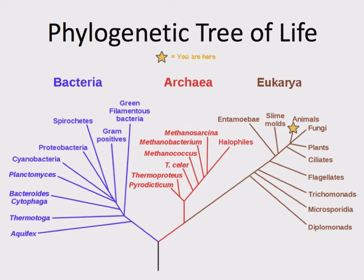Here is an example of a phylogenetic tree — kind of the phylogenetic tree. This is zoomed out as far as you can go, because this shows all living things on the planet contained within this single phylogenetic tree. There's a star showing you are here — that's where we are in the animals. You can see we're somewhat closely related to fungi, plants are also fairly close to us, along with groups we'll call protists. There are bacteria over here, another group called archaea, and the distance between groups represents how closely related they are evolutionarily.